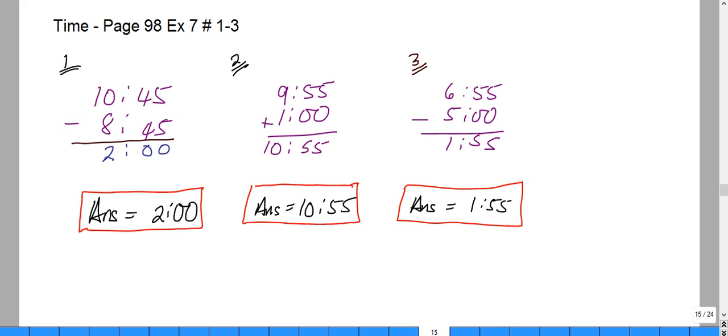How much time did it take? Quite simply we would subtract to find the difference. So 10:45 and we're going to take away 8:45. So 5 from 5 will leave 0, 4 from 4 would leave 0, and 8 from 10 would leave 2. So that would be a total time of 2 hours. Our answer for number one would be 2 hours.